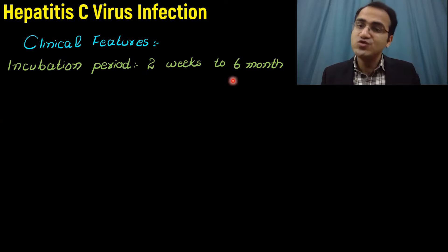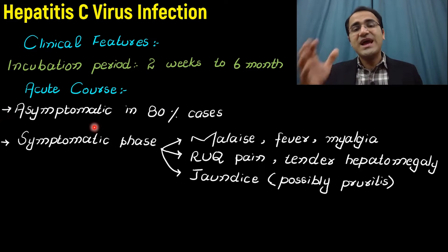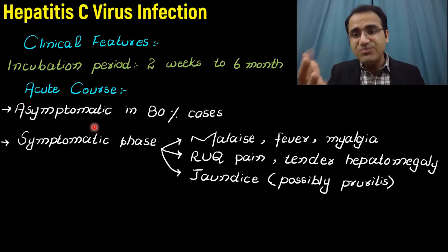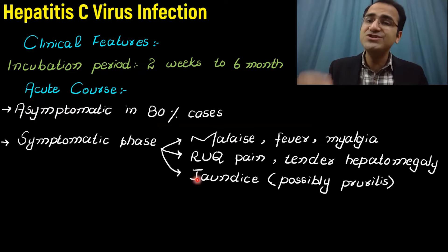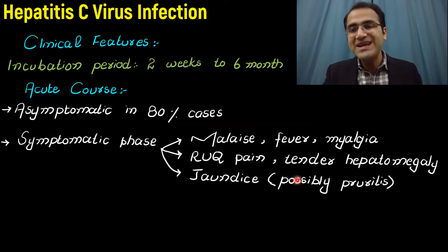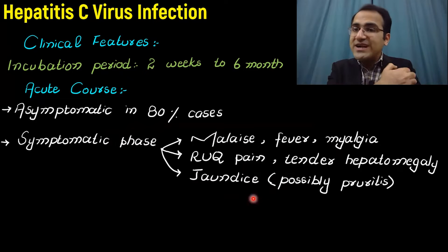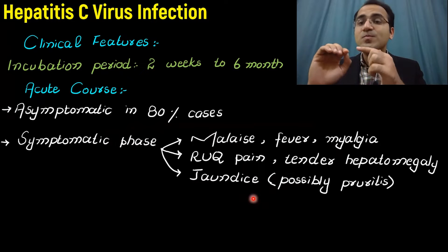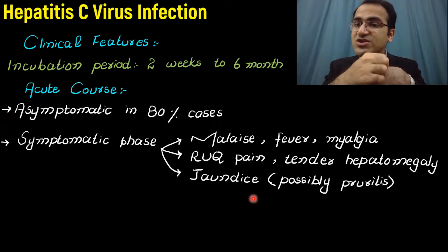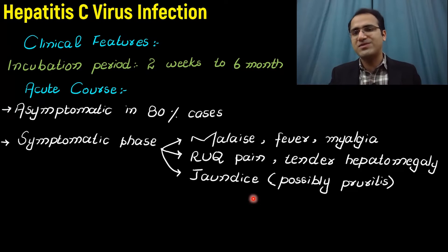The incubation period of hepatitis C virus lasts from two weeks to six months. In the acute course, it is asymptomatic in 80% of patients. If the patient develops a symptomatic phase, they develop malaise, fever, myalgia, body aches, right upper quadrant pain, tender hepatomegaly, and jaundice with pruritus due to excessive bilirubin accumulation. A physical examination finding in chronic HCV patients is polished nails due to excessive scratching of the skin.